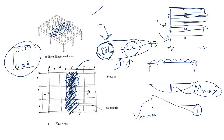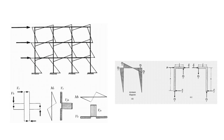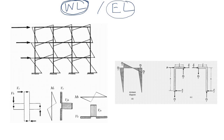This lateral load may be due to wind load or due to earthquake load. Wind load is always acting on a multi-storied building; earthquake load is not always acting — it is a periodical load. So we are only considering wind load here.